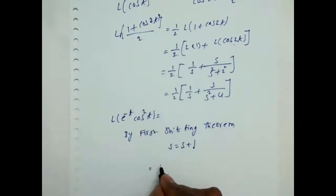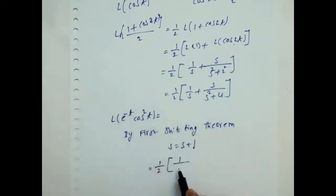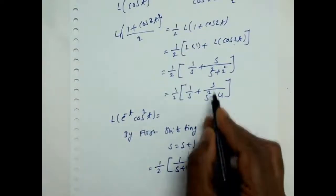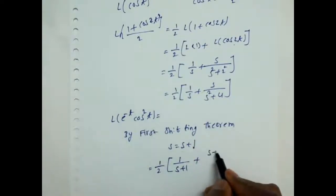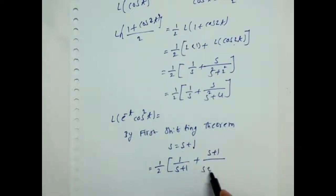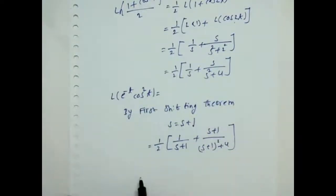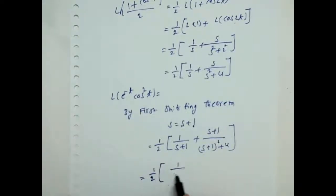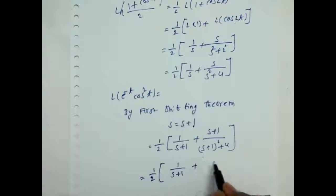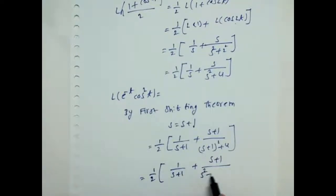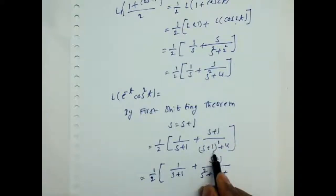That is equal to 1 by 2 into 1 by S plus 1, plus S plus 1 by S plus 1 whole squared plus 4. That is equal to 1 by 2 into 1 by S plus 1, plus S plus 1 by S squared plus 2S plus 1 plus 4, which gives S squared plus 2S plus 5.